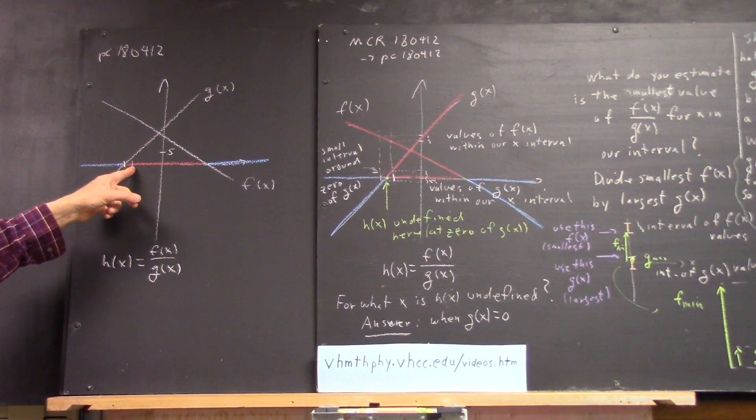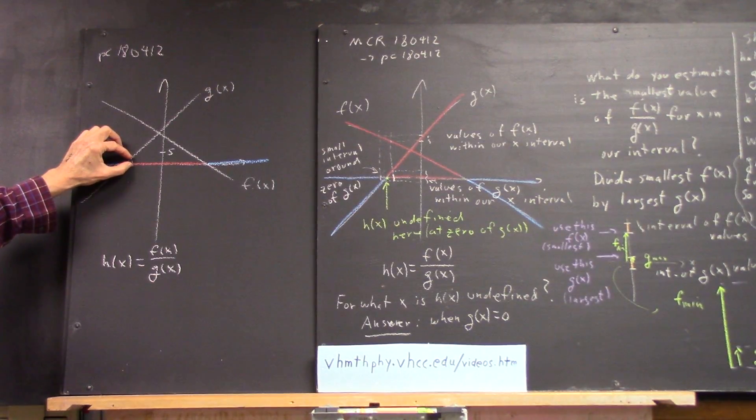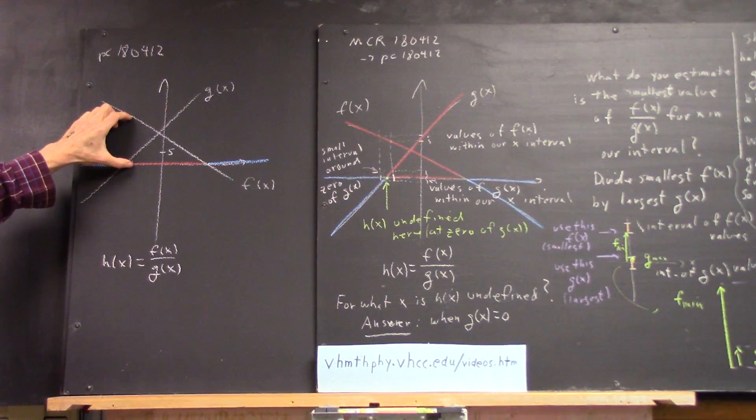If x is right here, then the value of g of x is this, right? And the value of f of x is this. What do you get if you divide this by this?